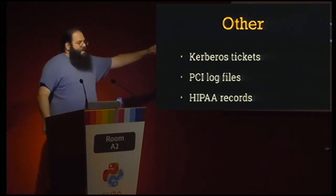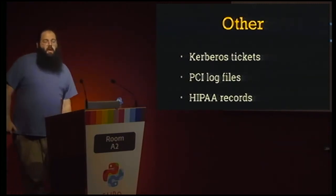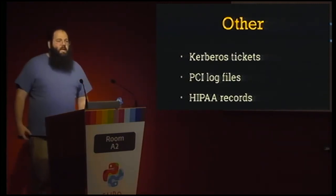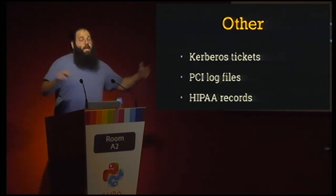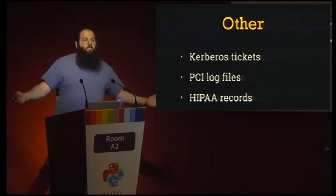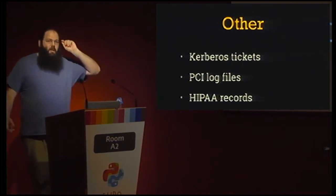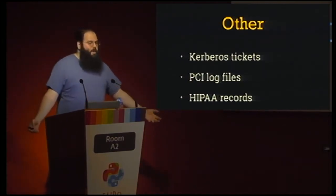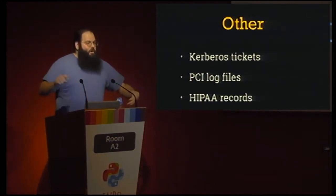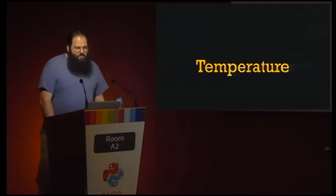Other miscellaneous secrets, like HIPAA — the healthcare privacy law in the United States — or PCI DSS record files require totally custom tooling. When you take credit card information, you have to store audit records. Those all require dedicated tools. They are still secrets, but we're not really going to talk about them today.